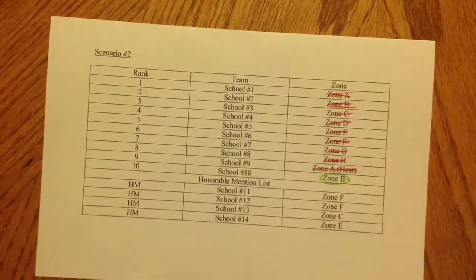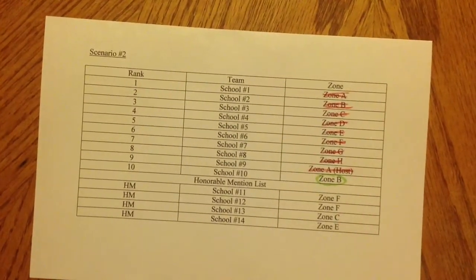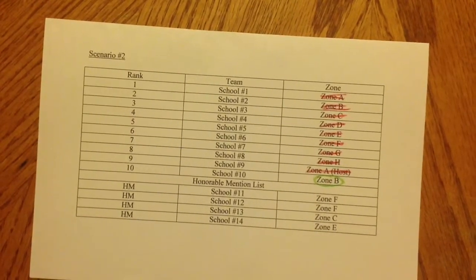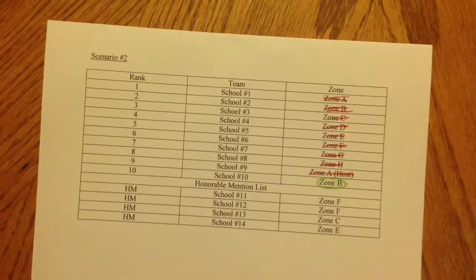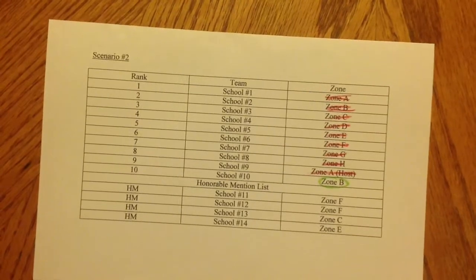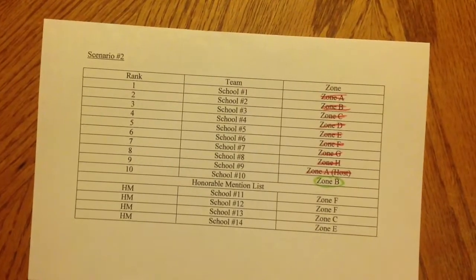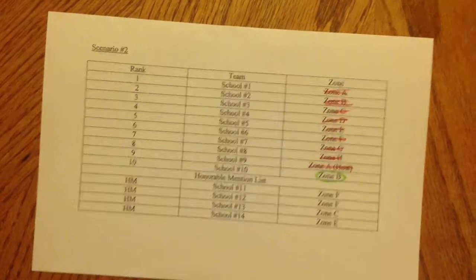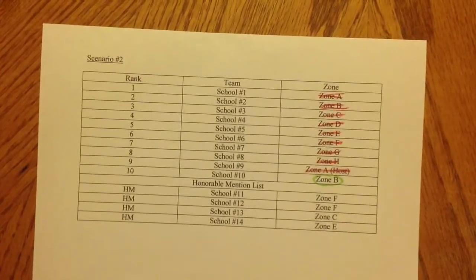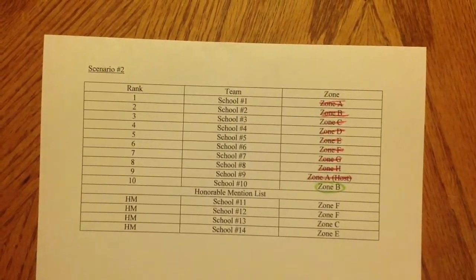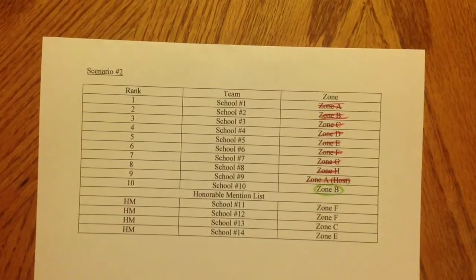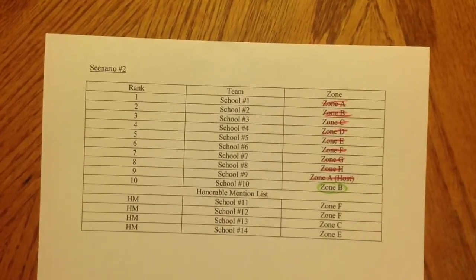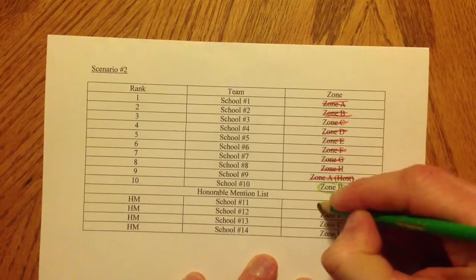It begs the question: who gets these wildcards using this list? Looking at the honorable mention list, we can see that there are two teams from Zone F that are eligible to earn a wildcard, which is more than Zone C and Zone E — each of those zones has just one team. Zone F has two teams, so we give the second wildcard to Zone F.